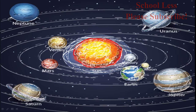Mercury is the smallest planet in size. The smallest size after Mercury is Mars. Mars is a red-colored planet. Earth and Venus are similar in size. Venus is called Earth's twin.